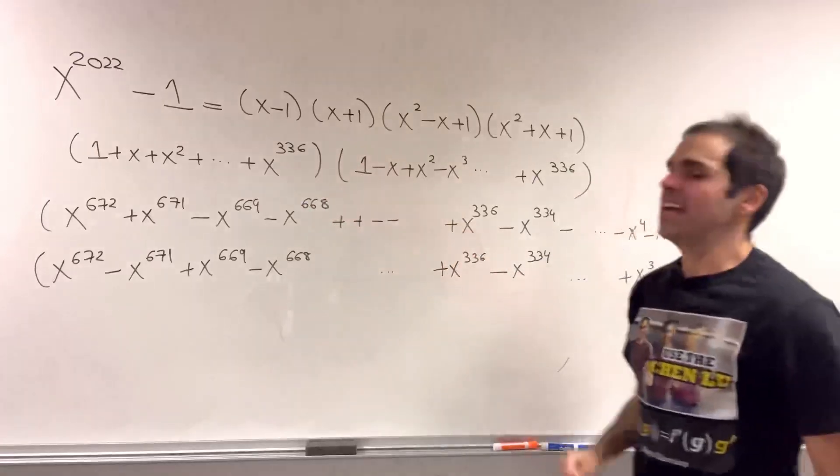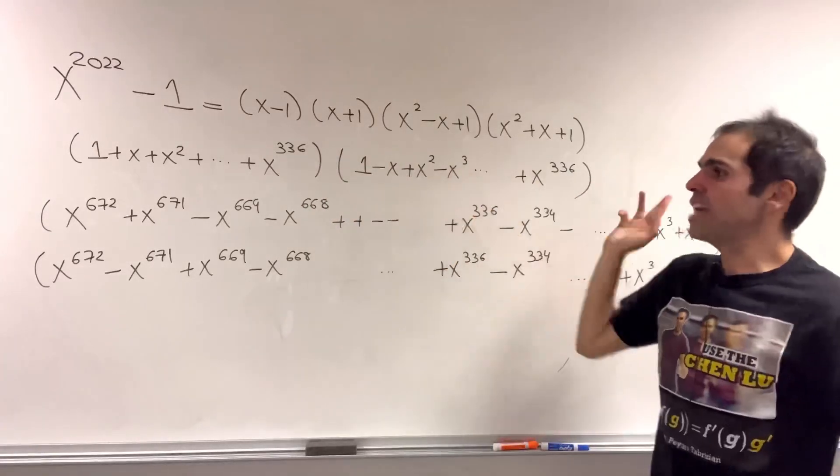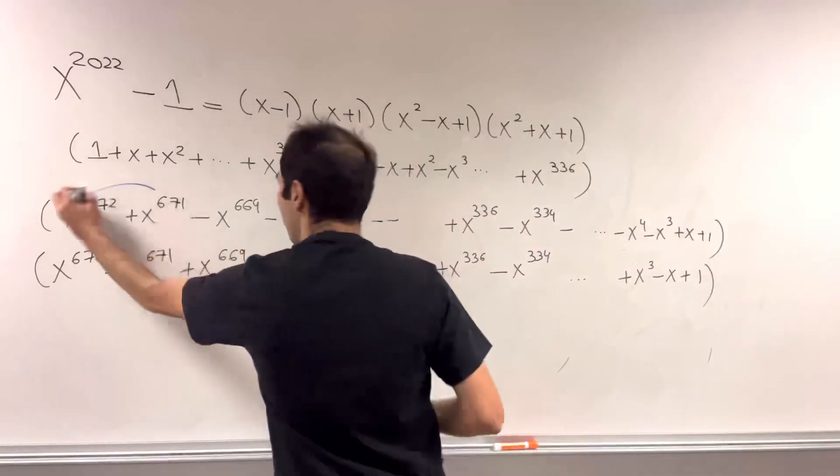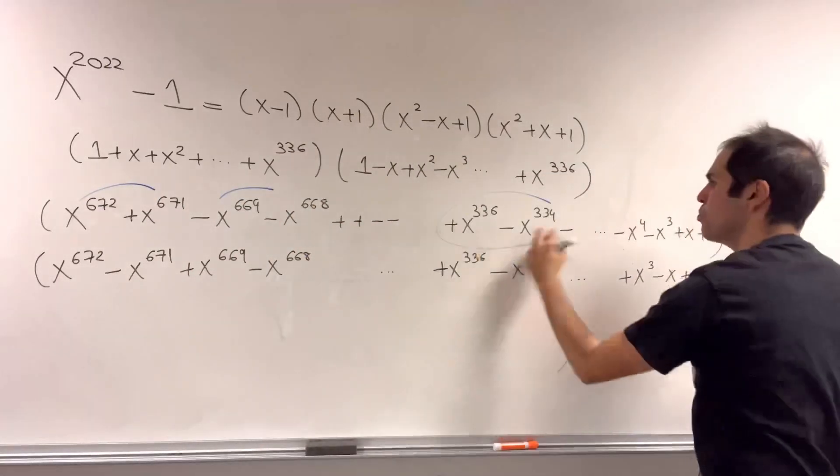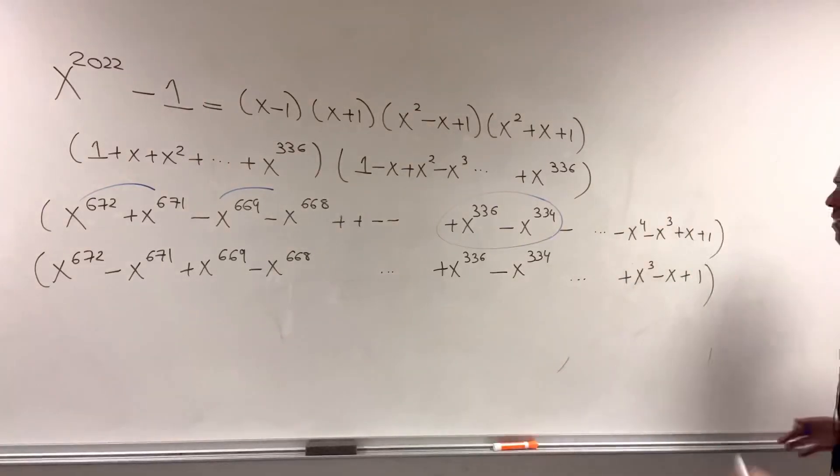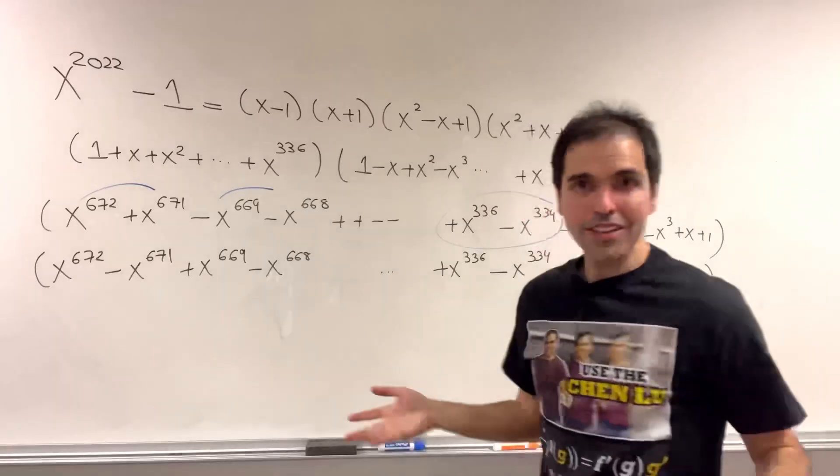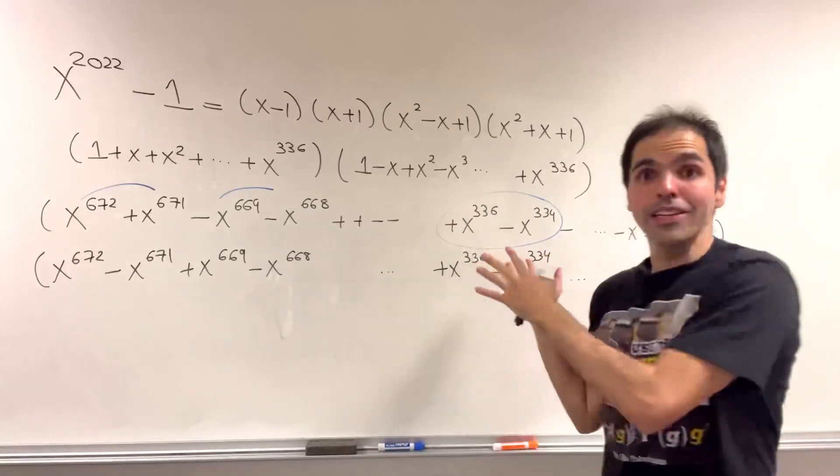And again, I know it looks like a nightmare. If you look at Wolfram Alpha, it's even worse than your worst nightmare. But what happens here is that we get x to the 2022 minus 1 is, again, the single root 1, minus 1, the third root of unities, the other third root of unities. And then this whole shebang, 1 plus x up to x to the 336, the same thing but alternating. And then the thing about pairs, plus plus, minus minus, where it breaks at this point. And same thing with the minus x. So that's all we can do.